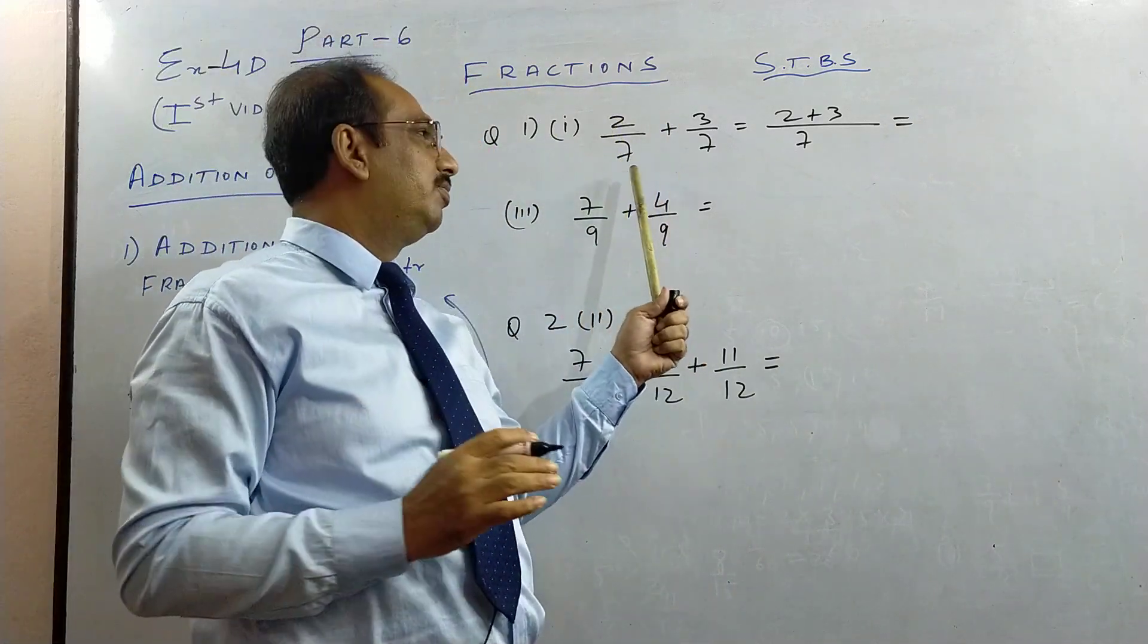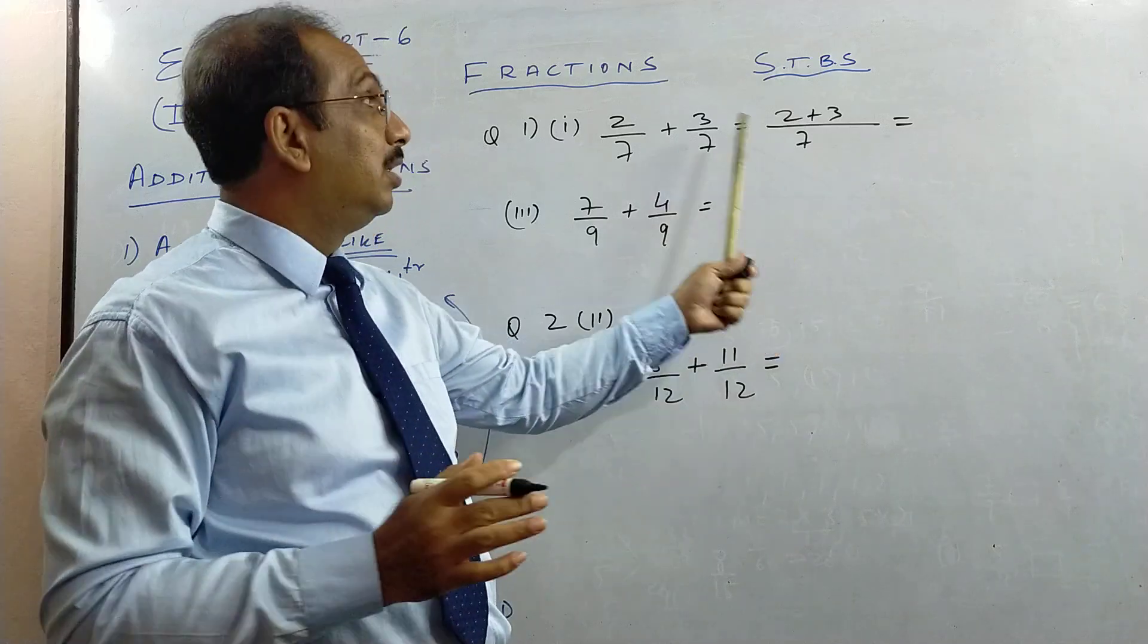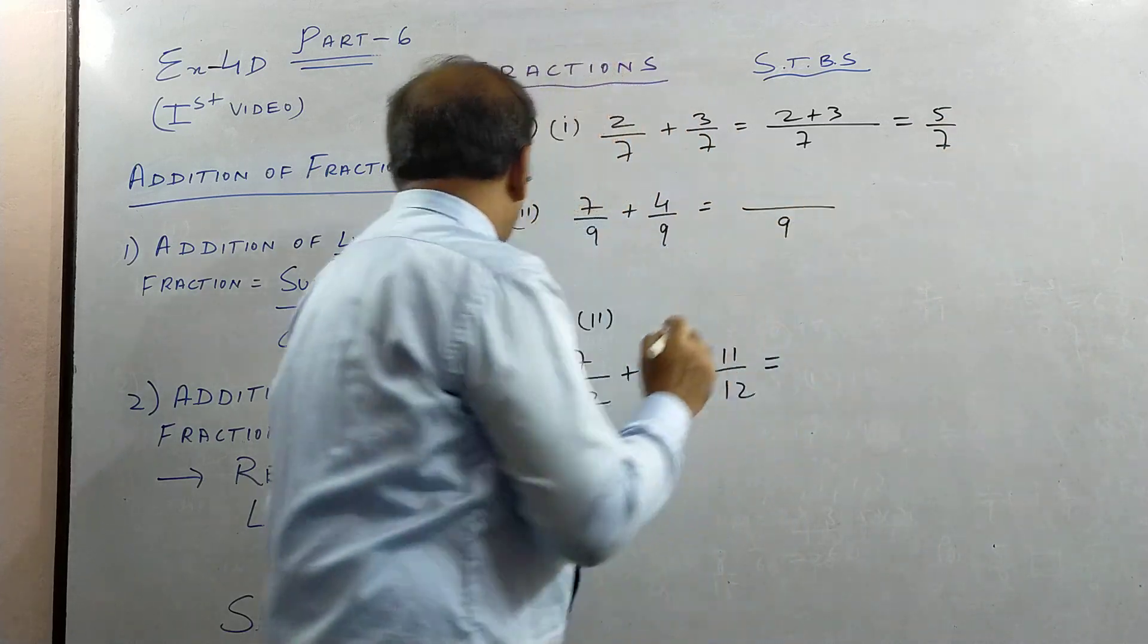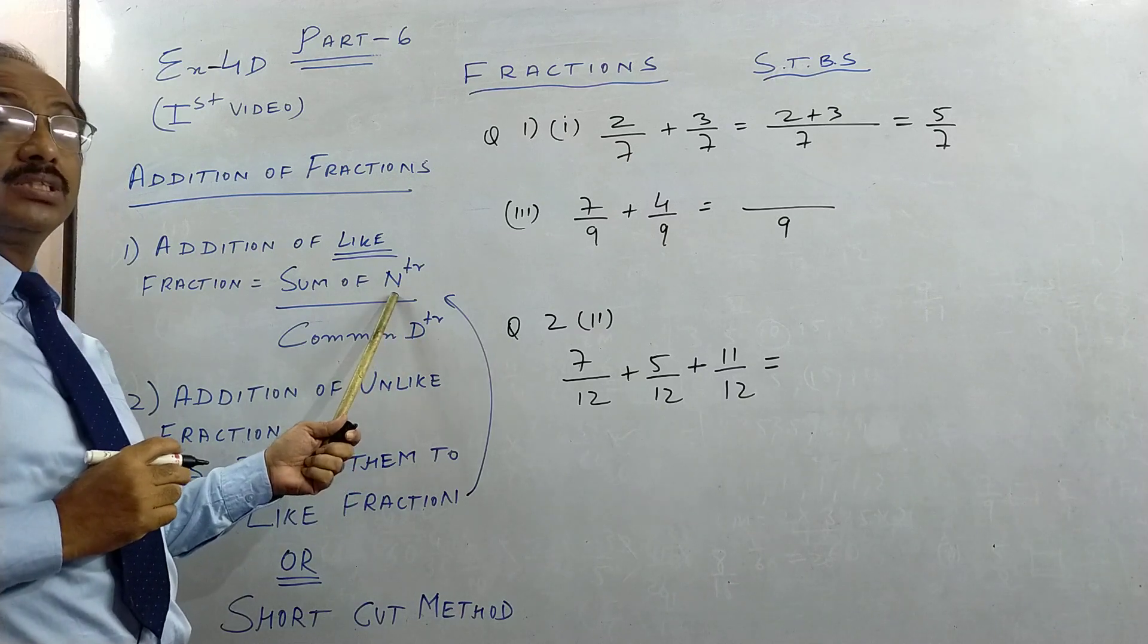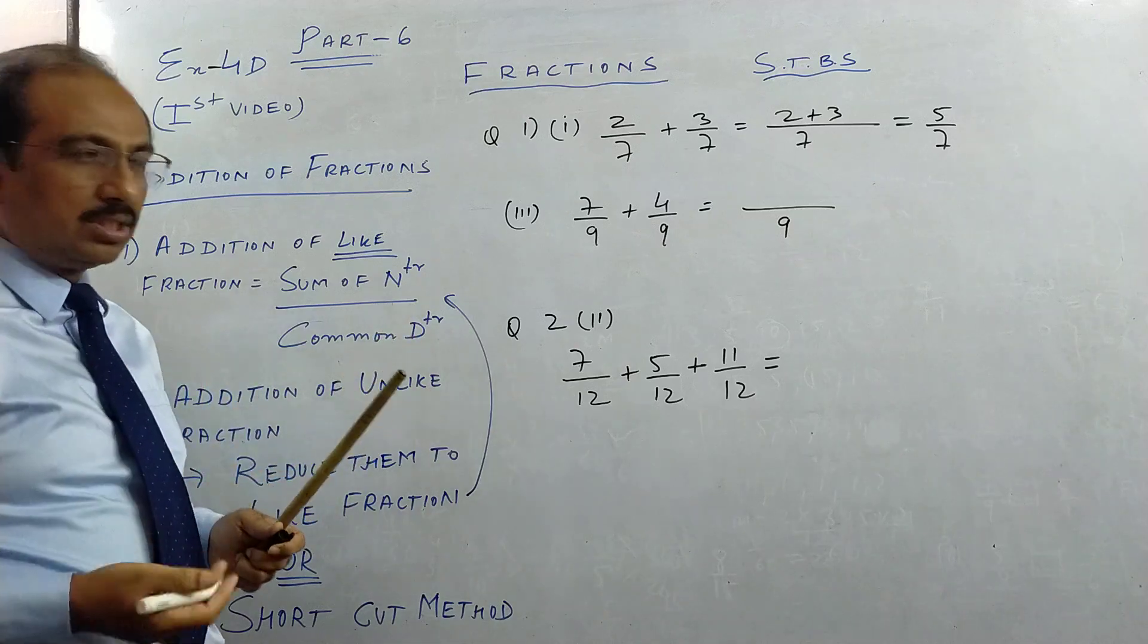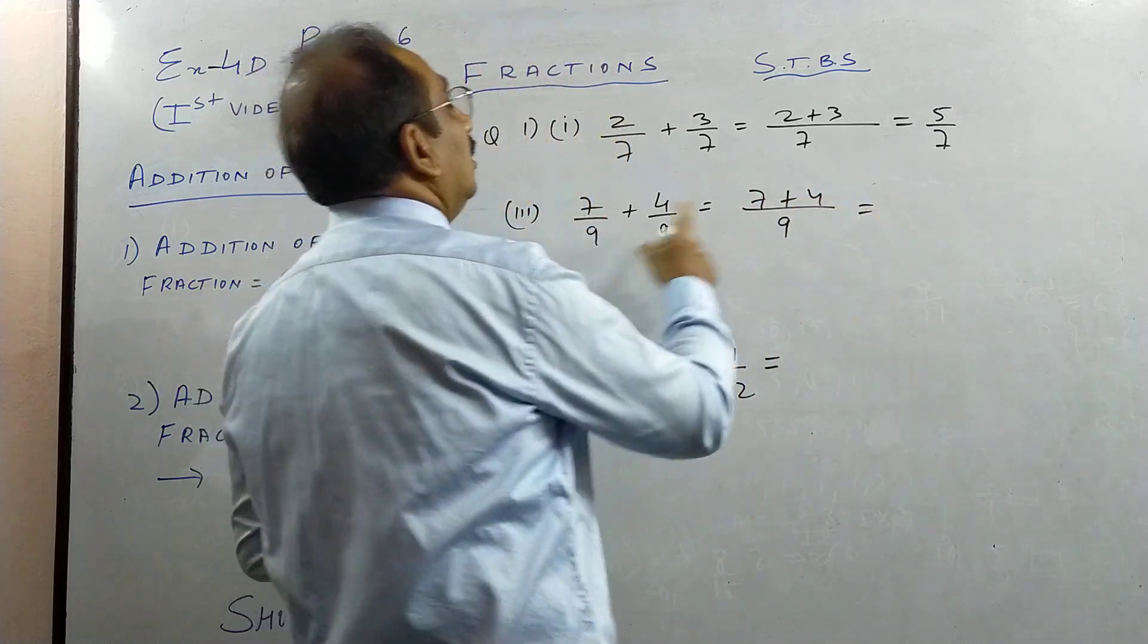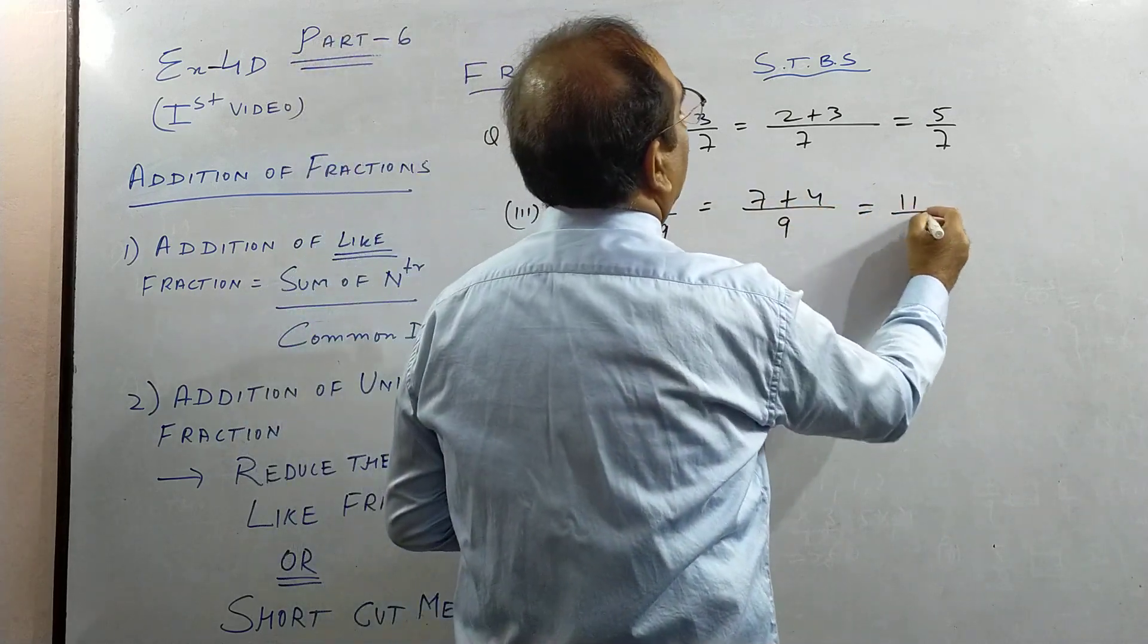Generally what we do children, we see the denominator 7, 7 common denominator. Then add the numerator, we get 5 by 7. Same way here children, common denominator. DTR means denominator and NTR means numerator, because numerator and denominator, the word TR also comes very prominently.